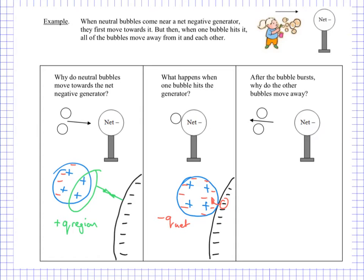Now this means that we have a negative charge on the bubble and a negative charge on the Van de Graaff. And now, if this bubble was to stay intact — which is highly unlikely because bubbles tend to pop — but if it was going to stay intact, as you've probably seen with other objects coming near to and touching a Van de Graaff, now it's going to feel a repulsion. It's going to move away. So this explains why we see bubbles moving towards the generator and then away from the generator.